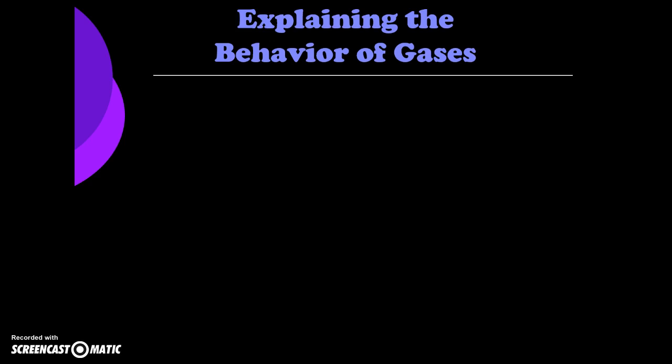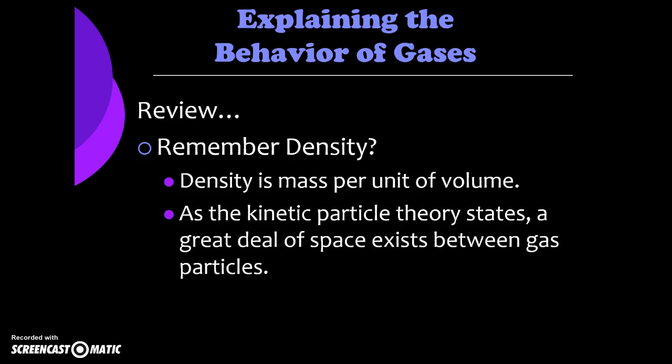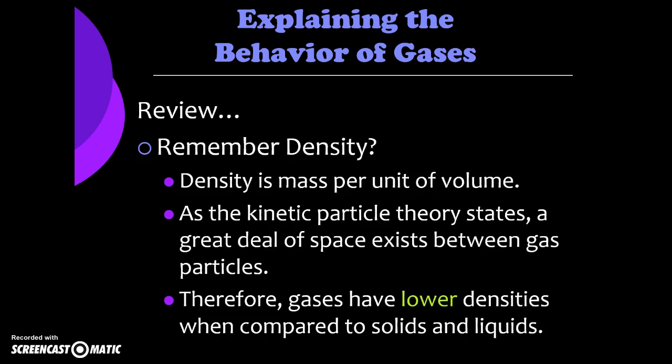We're going to use the kinetic particle theory and those five points to explain how gases behave. The first explanation, though, we already know a great deal about, which is density from the first unit. We know that density is the amount of mass per unit of volume. And as we look back at the kinetic particle theory, there's a lot of space between gas particles. This leads to a much lower density when we compare gases to other states of matter.